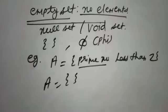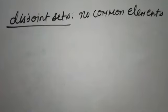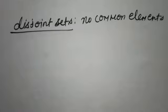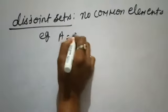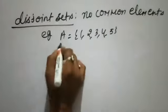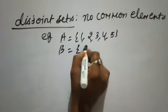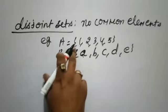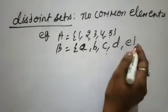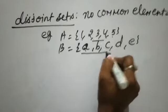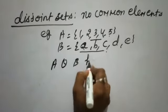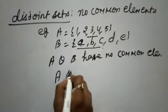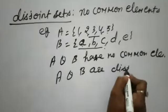Now we will understand about disjoint sets. Disjoint set means if two or more than two sets have no common elements, then the sets are known as disjoint sets. For example, set A has elements 1, 2, 3, 4, 5 and set B has elements a, b, c, d. When we compare both sets, they are having different elements — there is no common element. This is the set of natural numbers and this is the set of alphabets. So A and B are known as disjoint sets.